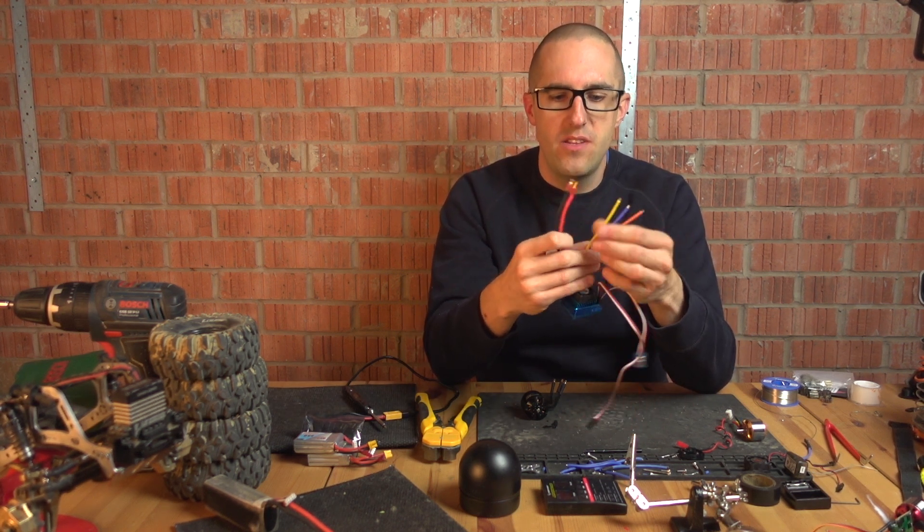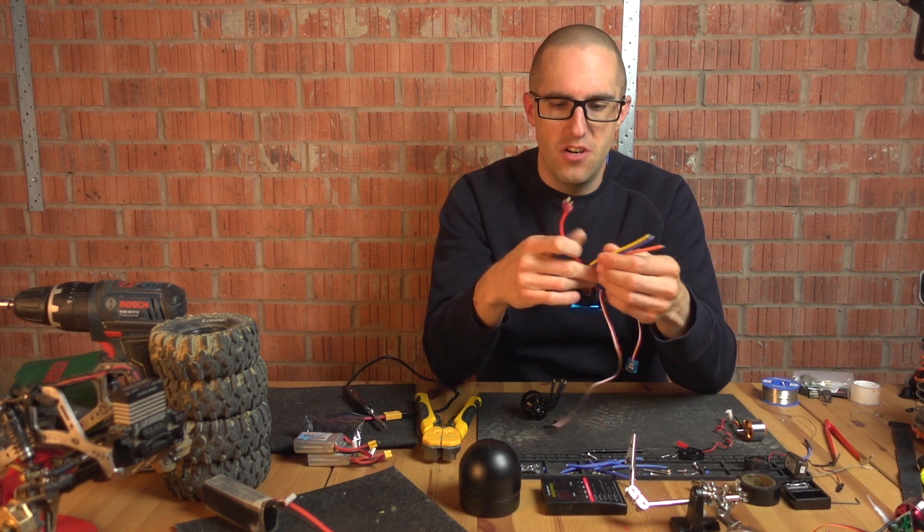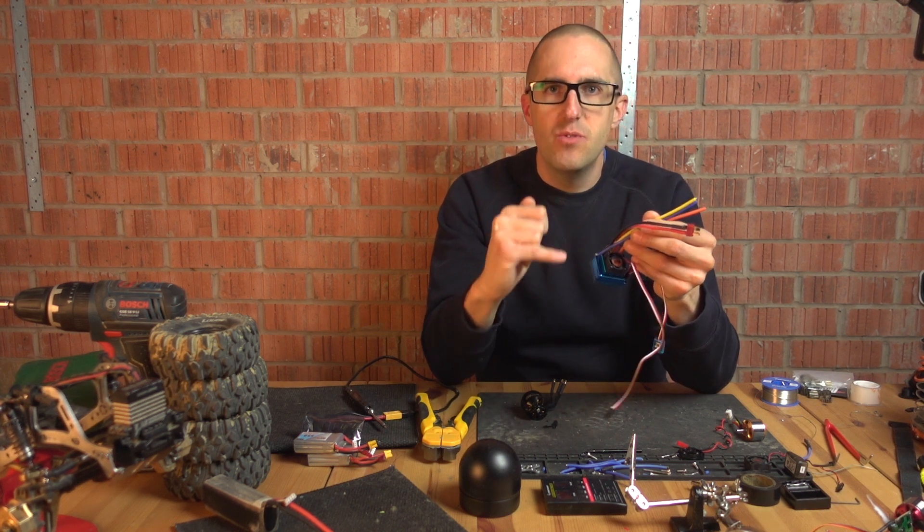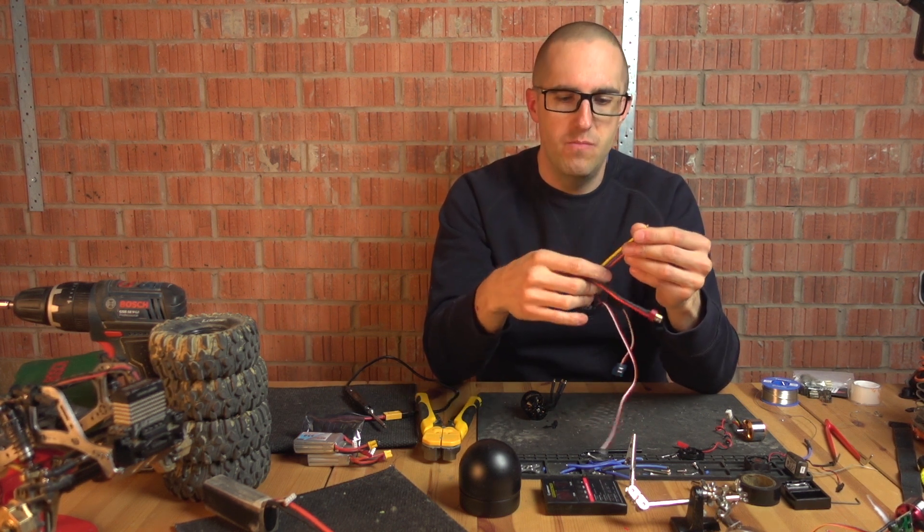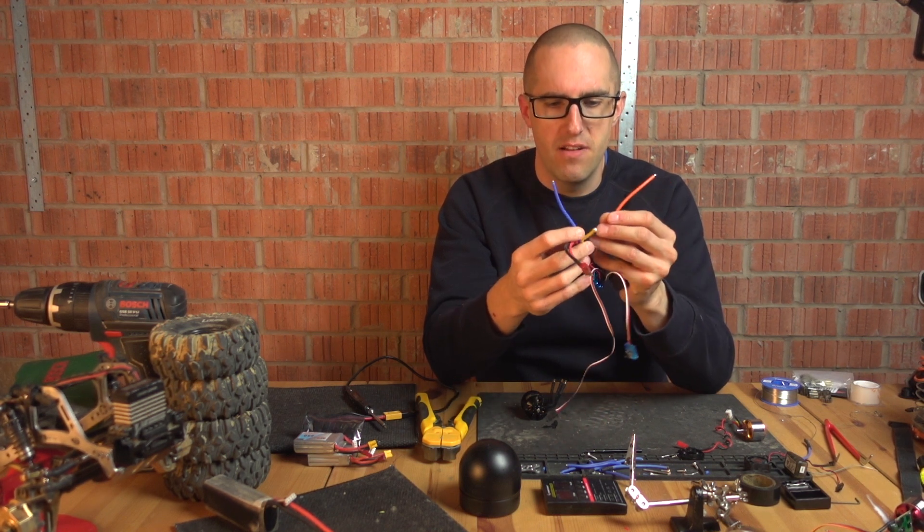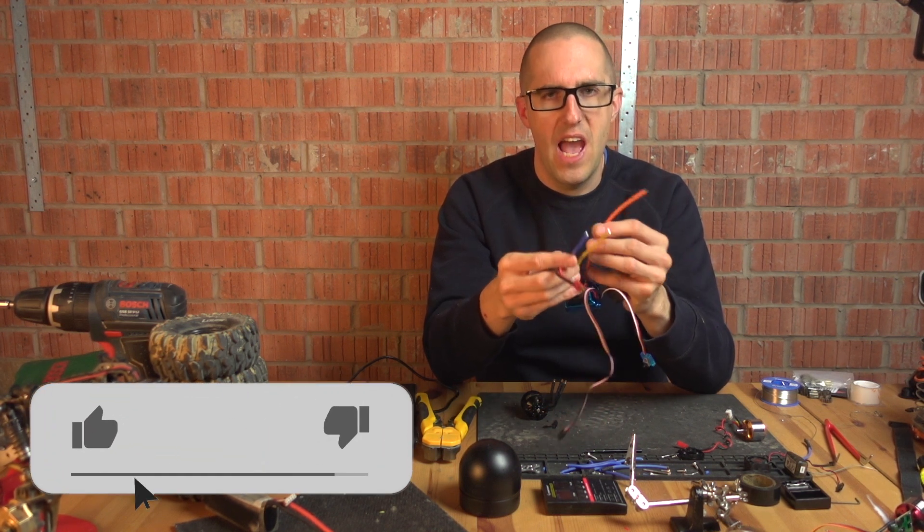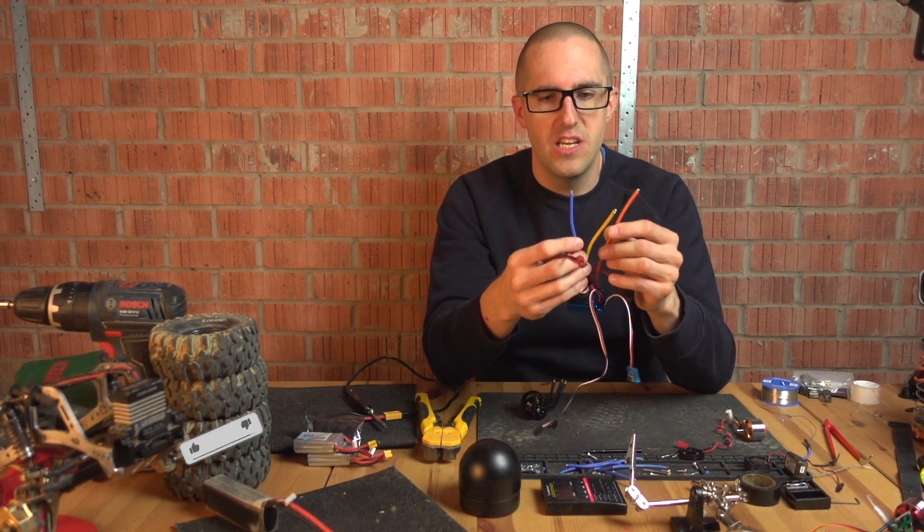It comes with three wires that are correctly labeled but incorrectly colored, so normally blue and orange are the other way around. Blue is normally A and C is normally orange.